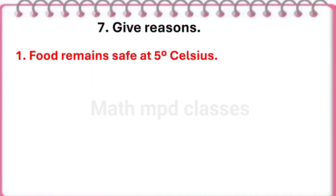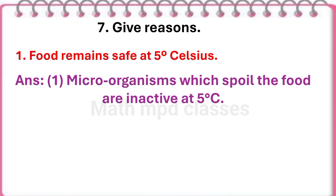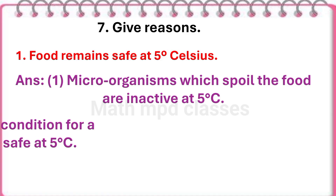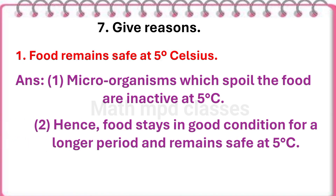Question number 7: Give reasons. First, food remains safe at 5 degrees Celsius. Answer: Microorganisms which spoil the food are inactive at 5 degrees Celsius. Hence, the food stays in good condition for a longer period and remains safe at 5 degrees Celsius.